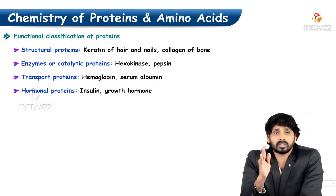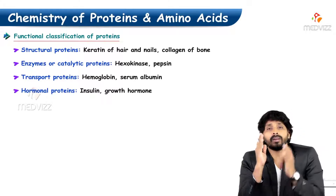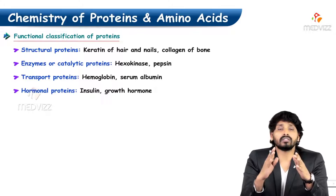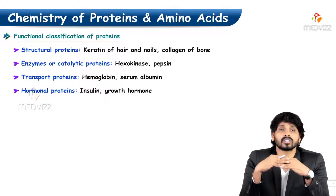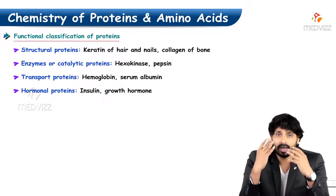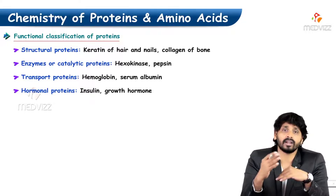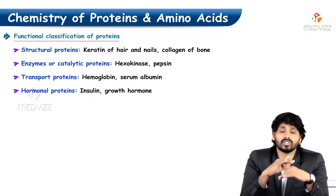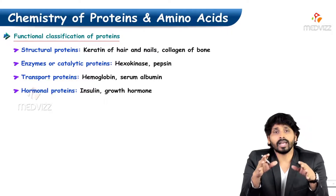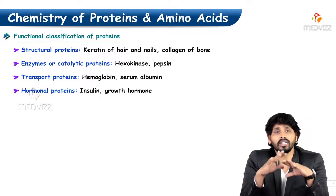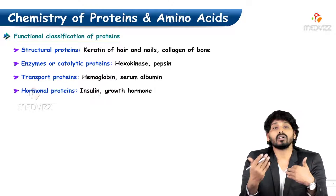Structural proteins — from the name, you can make out that these are proteins involved in giving structure. For example, keratin is a type of protein present in hair and nails, and collagen is found in bone. These are all involved in structural aspects.